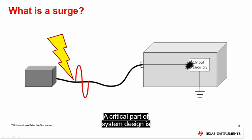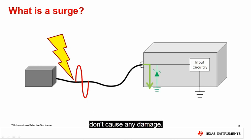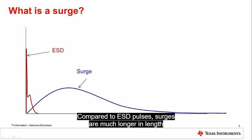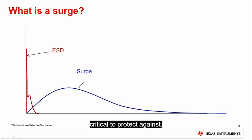A critical part of system design is being able to prevent these failures by safely shunting the transient spikes to ground and ensuring that they don't cause any damage. Compared to ESD pulses, surges are much longer in length and contain far more energy, making them critical to protect against.